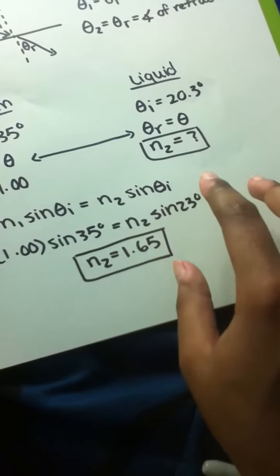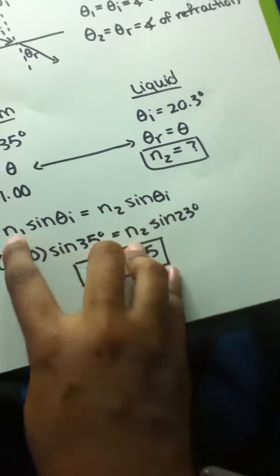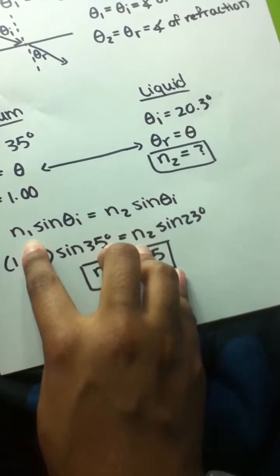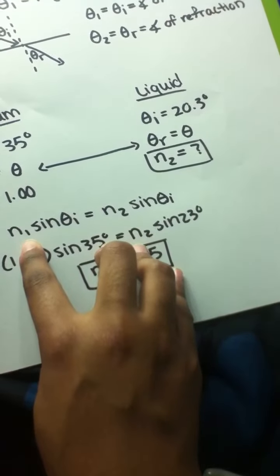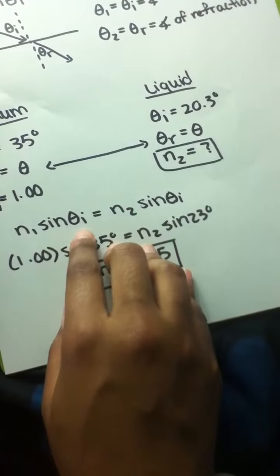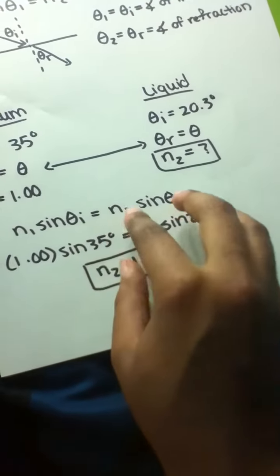Just rewriting Snell's law that I wrote down earlier, we have the index for the air multiplied by the sine of the angle of incidence is equal to n₂, or the index for the liquid.